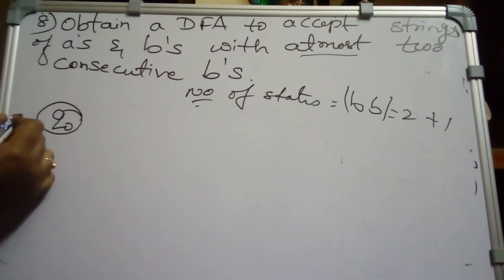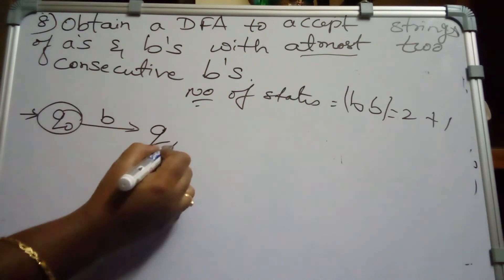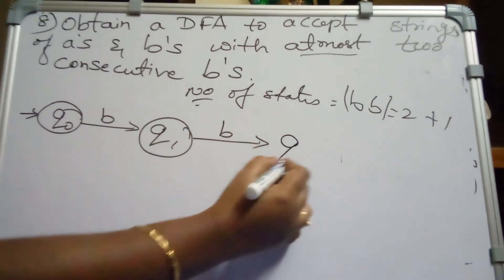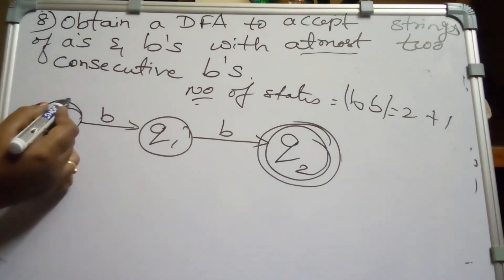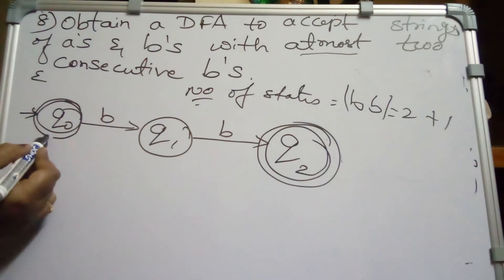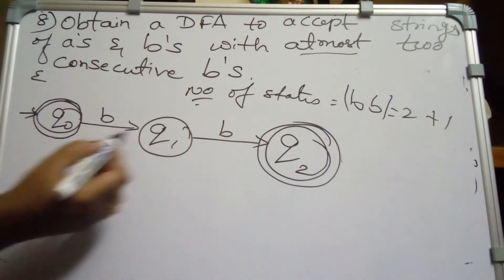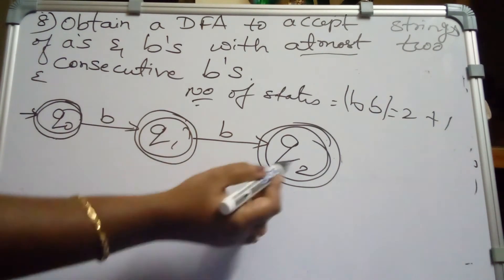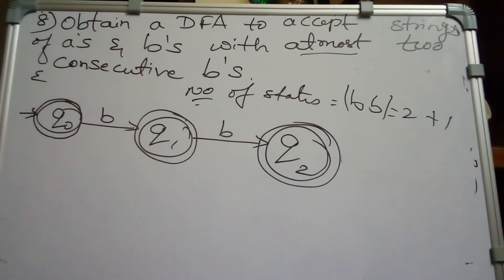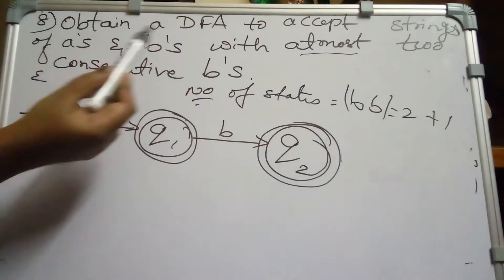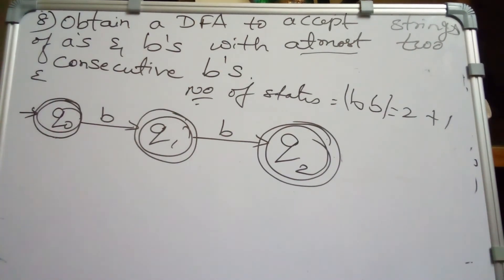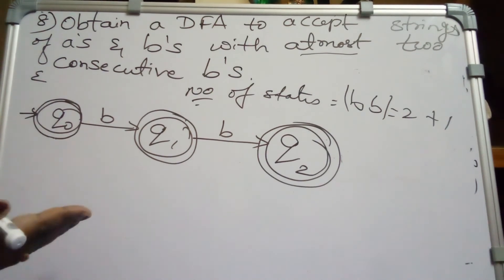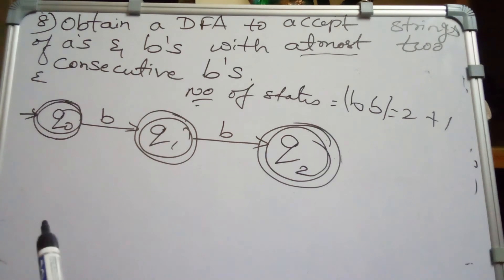At most two B's means the string may have no B, one B, or two B's — all must be accepted. So Q0, Q1, and Q2 are all final states. That is why we have three final states: the DFA accepts strings with zero, one, or two consecutive B's but rejects strings with three or more.